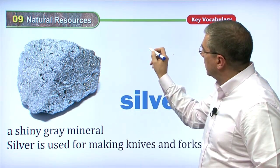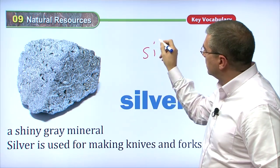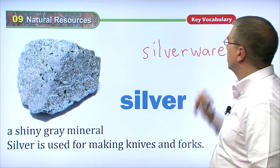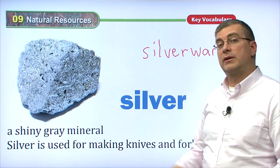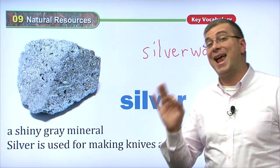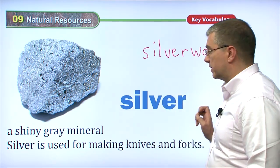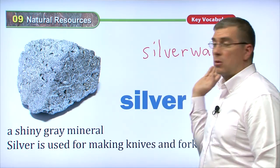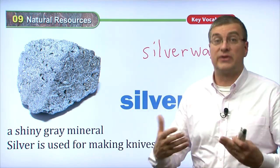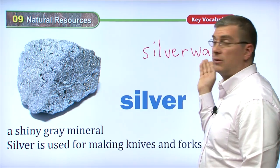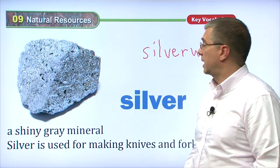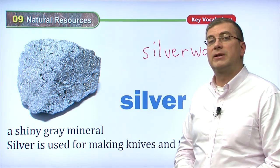Silver is used for making knives and forks. In fact, we have a word in English we usually use to talk about that — we call it silverware. If you go to somebody's house and they talk about where is the silverware, they're talking about the knives, the forks, and the spoons. Rich families in the past had knives, forks, and spoons actually made of silver — that's why they called it silverware. Silver is also used sometimes for money and for jewelry.